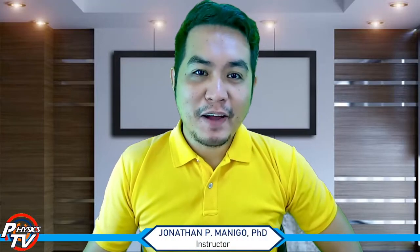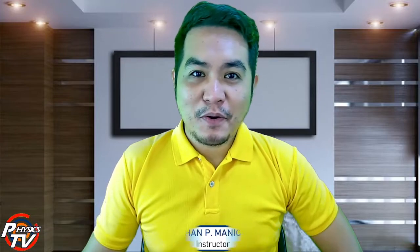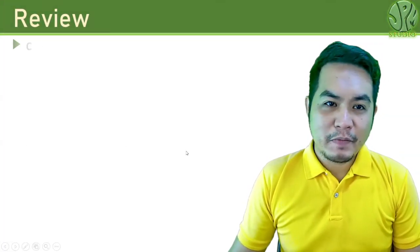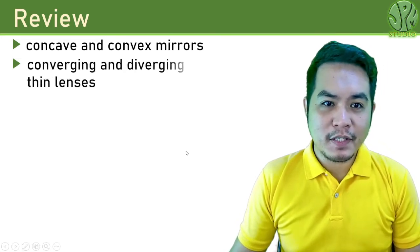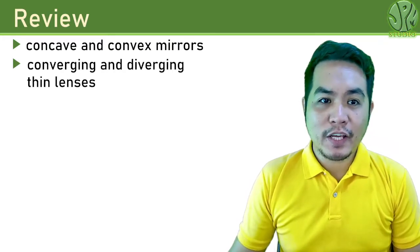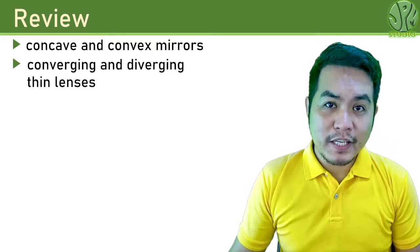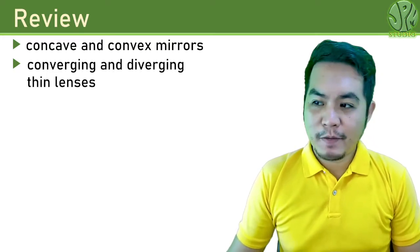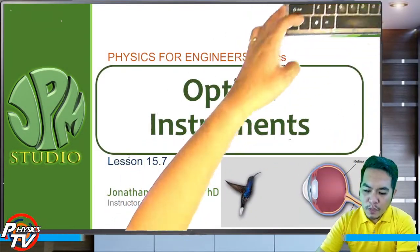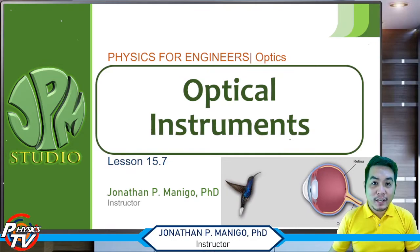Hello and welcome back to the course on Physics for Engineers. This is the final lesson for the final chapter of this course. Before we proceed, let us first review some concepts. In the previous lesson, we discussed concave and convex mirrors and also converging and diverging thin lenses. Concave mirrors are also called converging mirrors and convex mirrors are also called diverging mirrors. For this last topic, we will be talking about optical instruments.